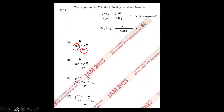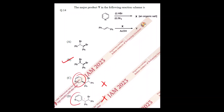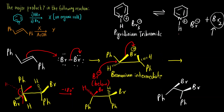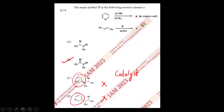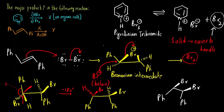The correct answer is option B. Options C and D are incorrect. The pyridinium ion acts as a catalyst and is not consumed. Pyridinium tribromide, being a solid, is easier to handle than Br2, which is why it is used in many experiments for bromination reactions. The correct answer for this question is option B.